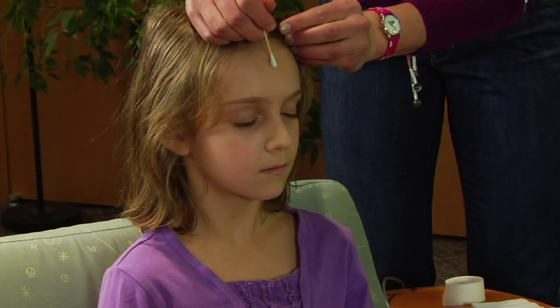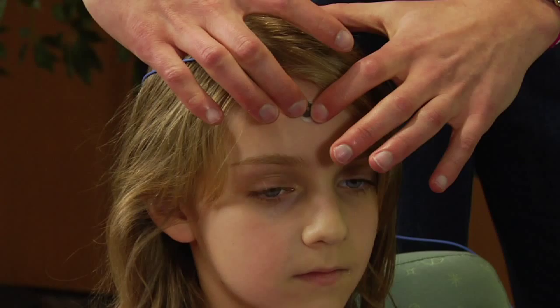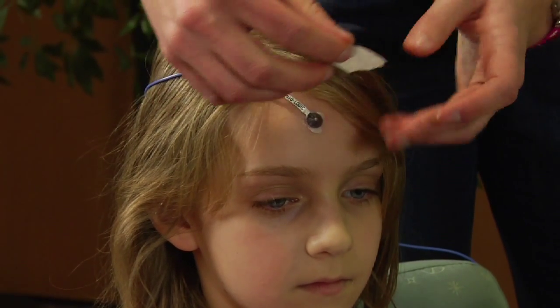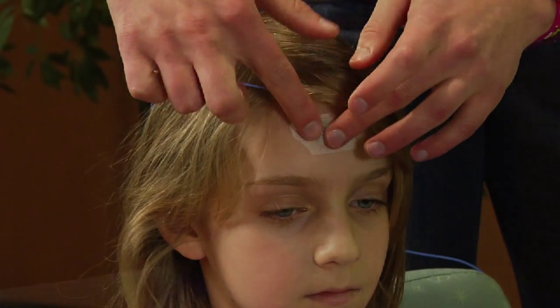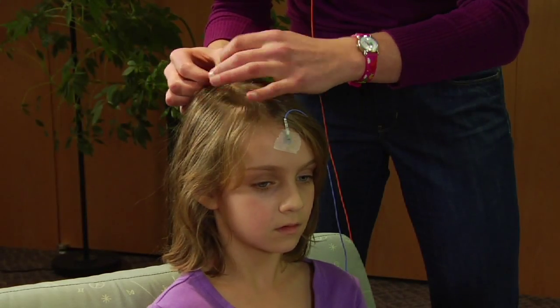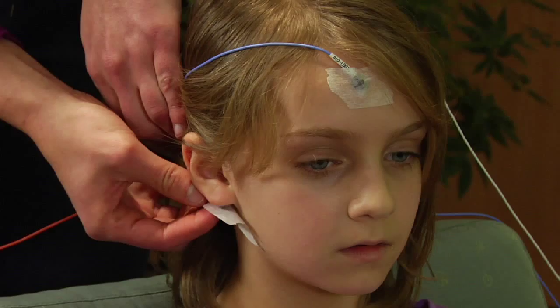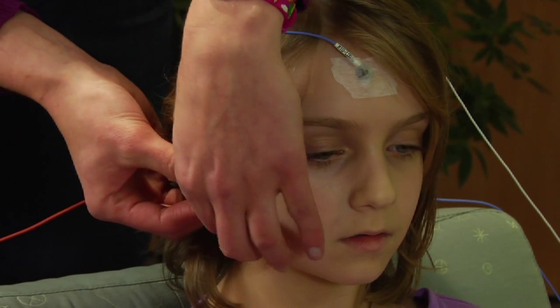After cleansing and preparing the skin, three electrodes are placed on the person's head. The ground electrode can either be placed on the forehead or on the left earlobe. Today we will be using the forehead. One electrode is placed on the top of the head at CZ and will serve as the active channel. The reference electrode is placed behind the right earlobe.